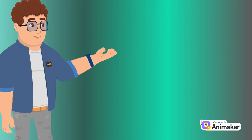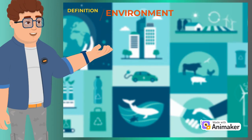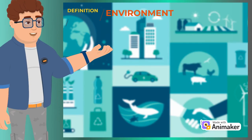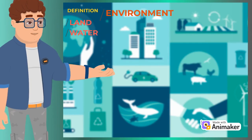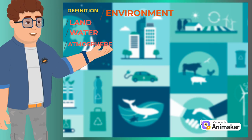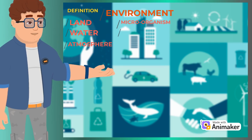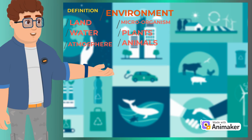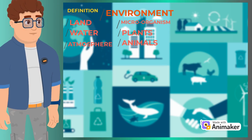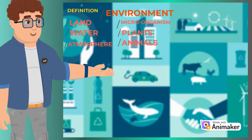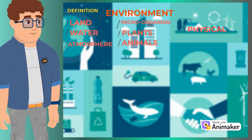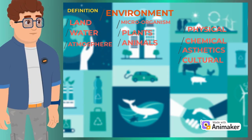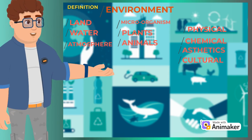The definition of the environment according to NEMA is: the surroundings within which human beings exist, made up of: 1. the land, water, and atmosphere of the earth; 2. microorganisms, plant, and animal life; 3. any part or combination of the first and second and the interrelationships that exist among and between them; and 4. the physical, chemical, aesthetic, and cultural properties and conditions of the foregoing that influence human health and well-being.